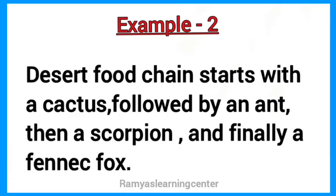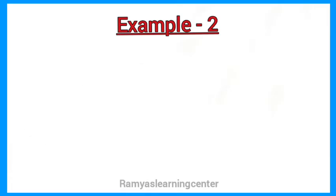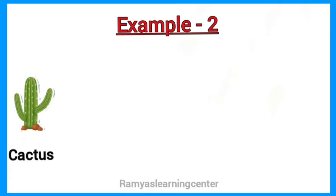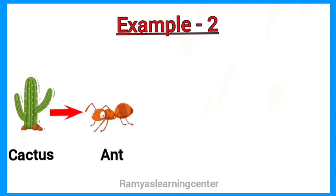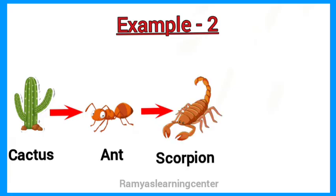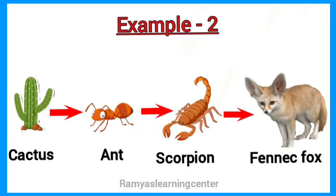It can be shown like this. First, cactus. The cactus is eaten by the ant. The ant is eaten by the scorpion. The scorpion is eaten by the fennec fox.